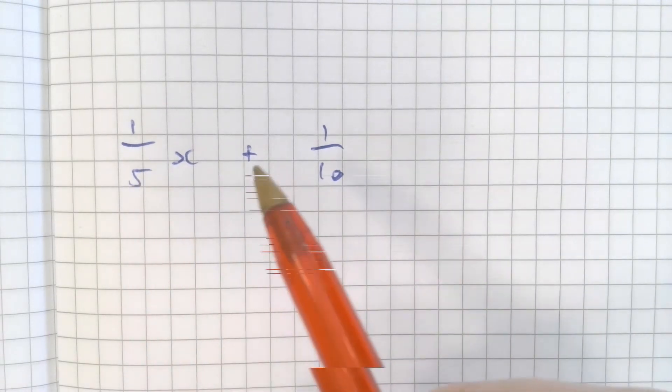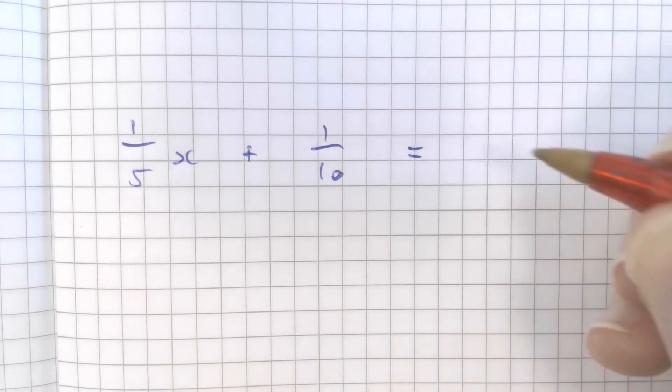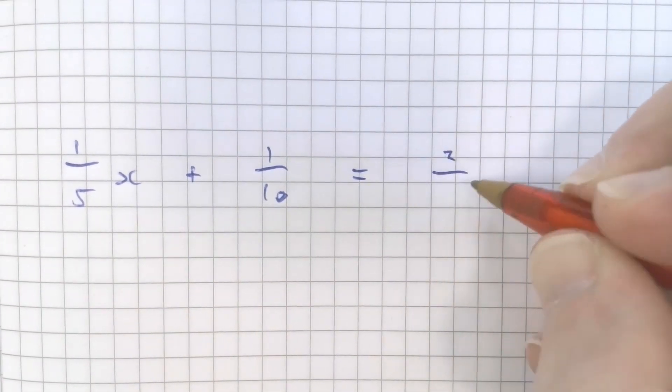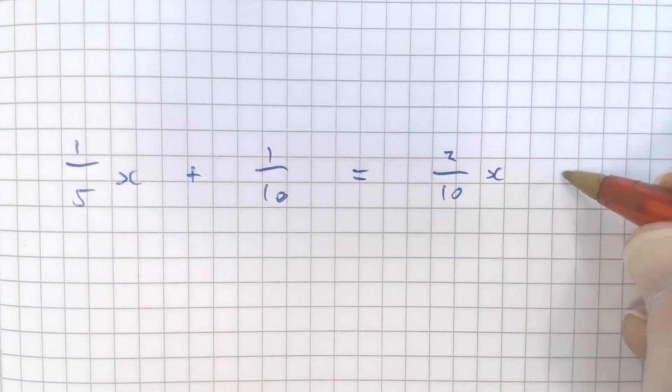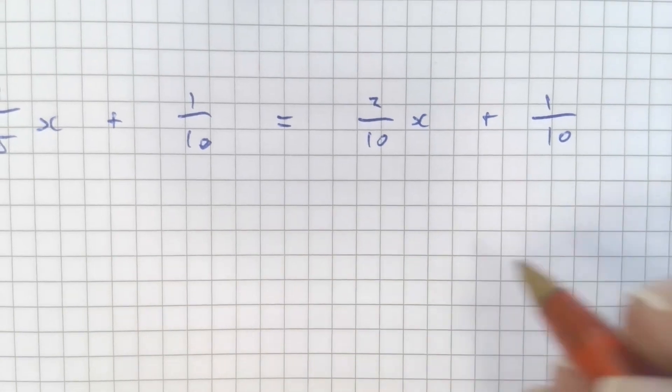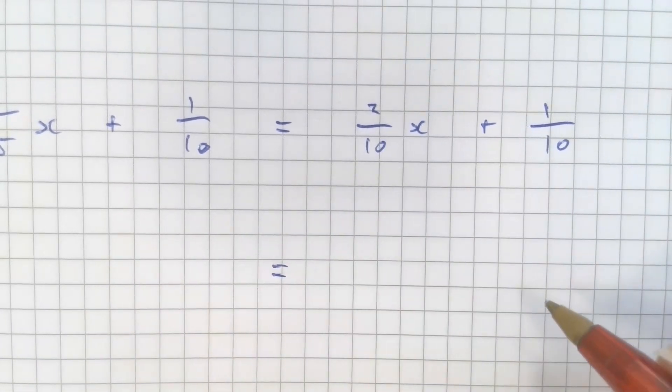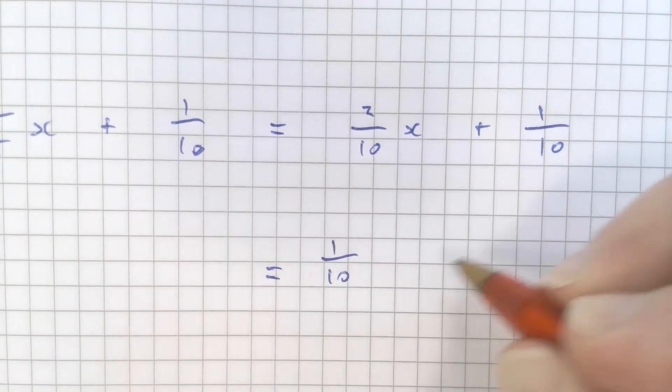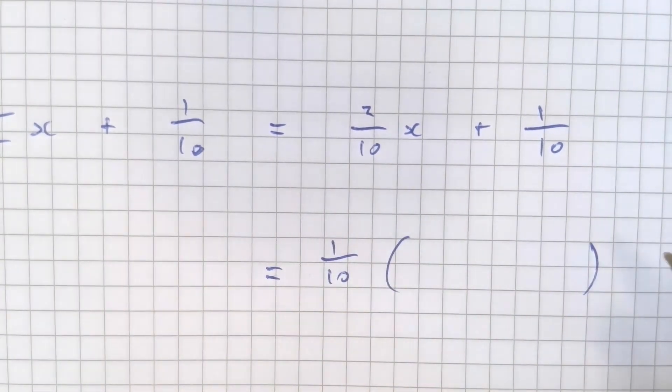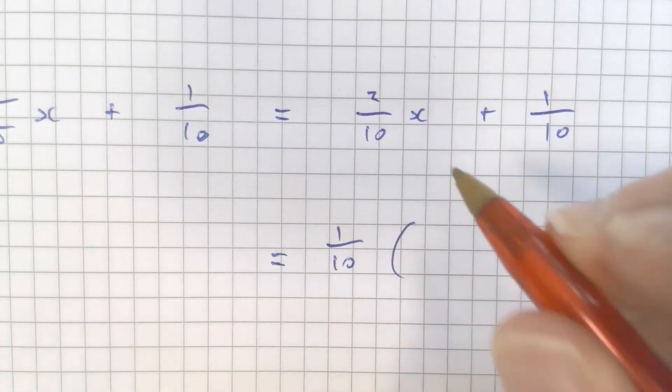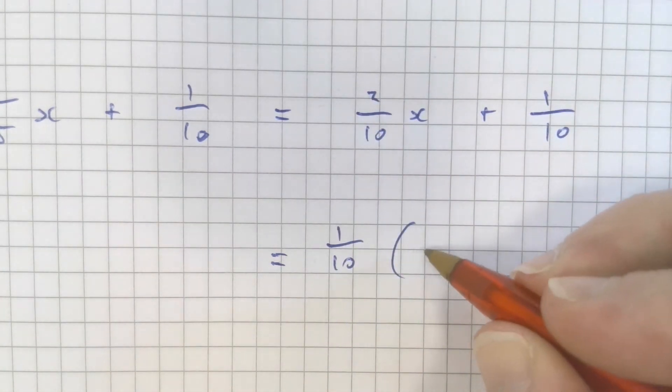But what if it was a fifth x and 1 over 10? I would recommend that you rewrite this as 2 over 10 instead of a fifth for x and then plus 1 over 10. And then once that's there, factorizing that is more straightforward. Let's take out one tenth of this expression. And then inside the bracket, what do I times one tenth by to make two tenths of x? Well, that's got to be 2x.